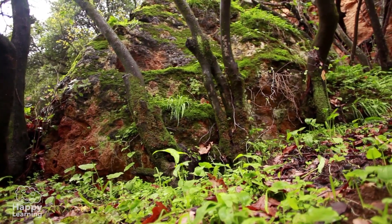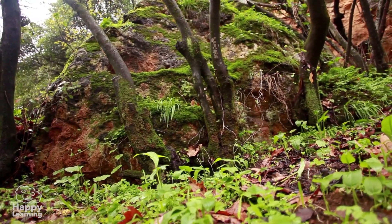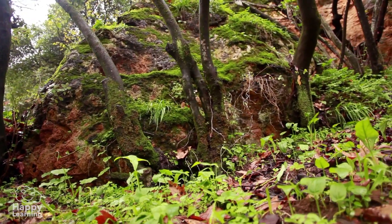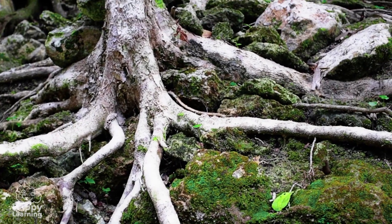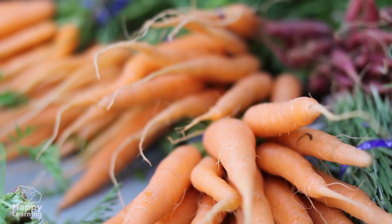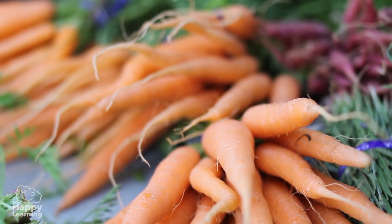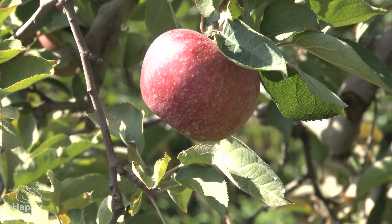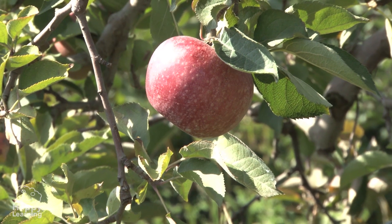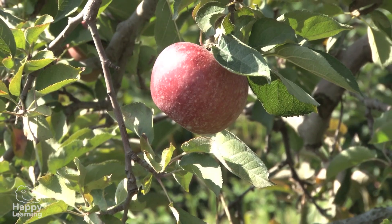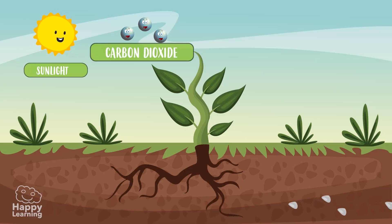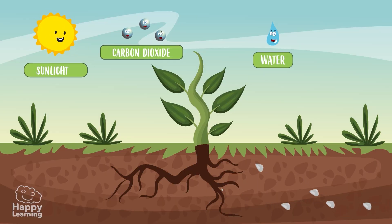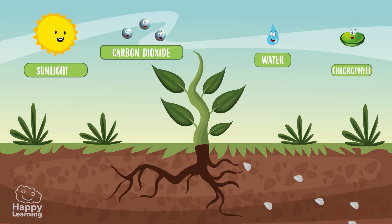All plants feed from elaborated sap, and they store it in their roots, like a carrot, or in their fruits, like an apple or a pear. Now we know how photosynthesis takes place.